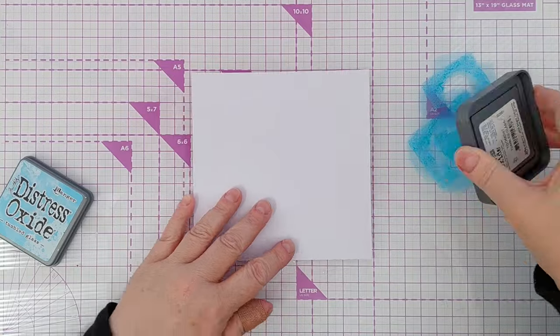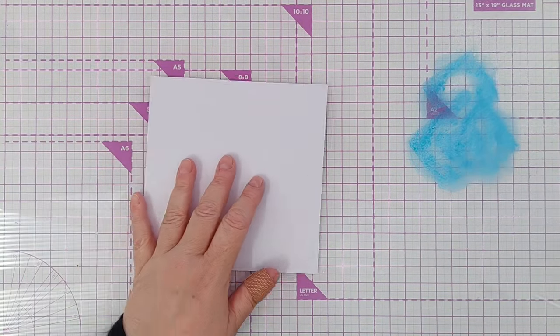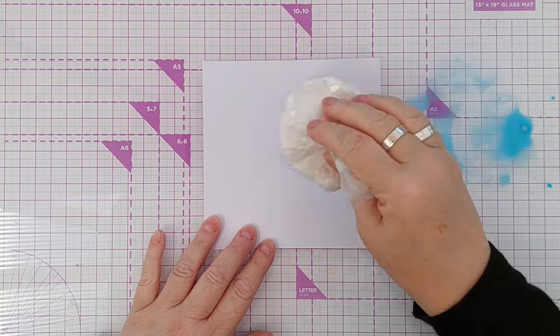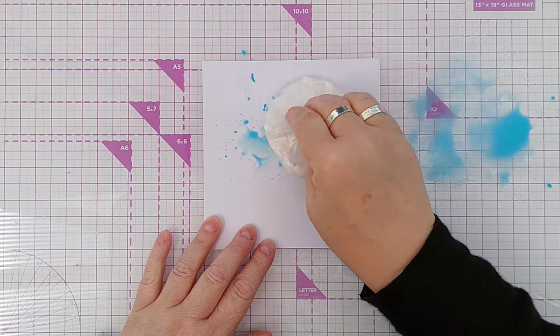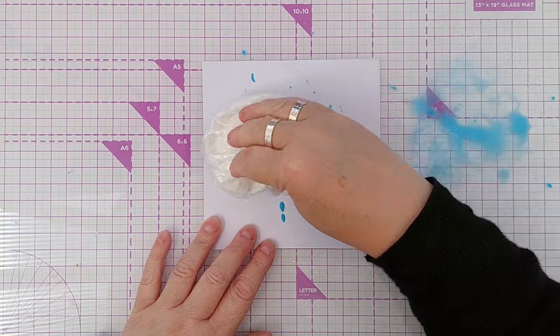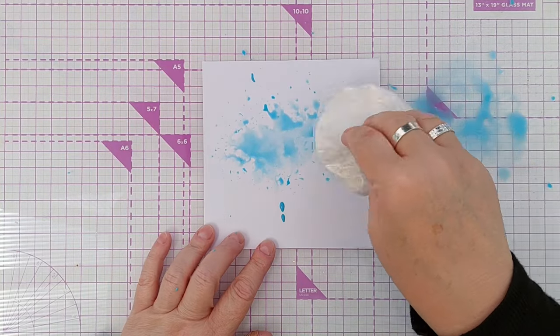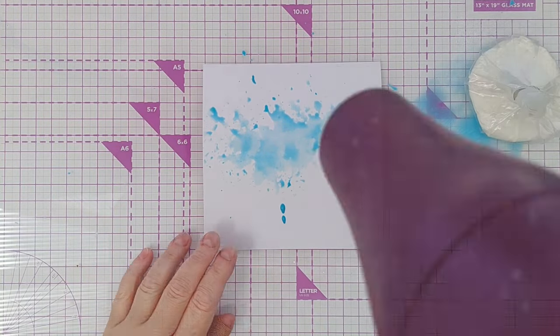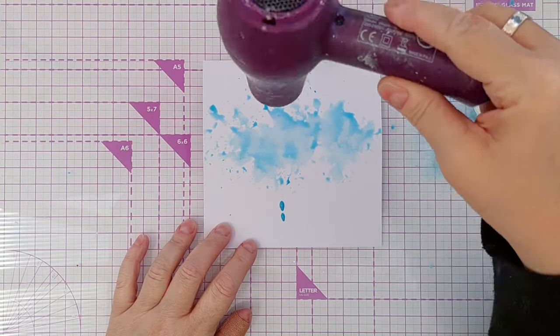For my ink smushing, I'm using tumbled glass distress oxide and my smusher. If you want to know how to make and use a smusher, there is a playlist linked in the video description. I smushed one layer of tumbled glass, dried it with my hairdryer, and then smushed a second layer and set that aside to dry.